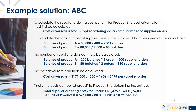We're almost there. If total supplier ordering costs for product B are $76,000, we can finally work out the cost per unit. We're going to make 80,000 units of product B in that period, so $76,000 divided by 80,000 units arrives at $0.95 per unit.